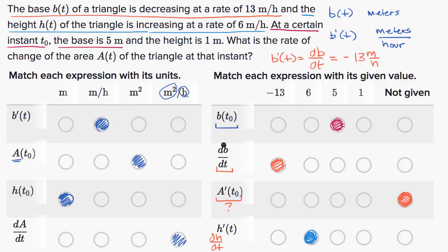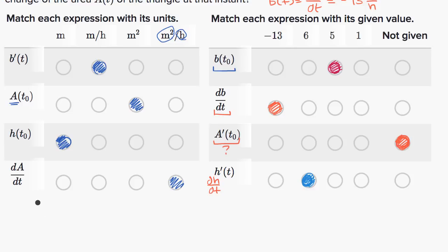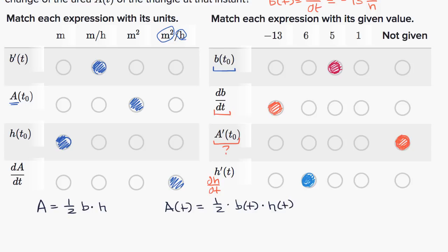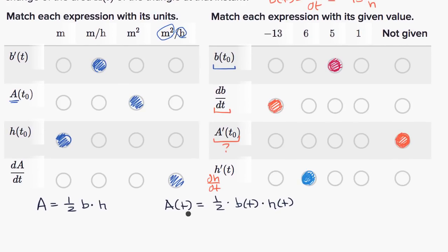Now we're ready to solve. For any triangle, area equals one half base times height. In this situation, area, base, and height are all functions of T, so A of T equals one half times B of T times H of T. To find the rate of change of area at that instant, we take the derivative of both sides with respect to T. The left side gives A prime of T. On the right side, using the product rule: one half times B prime of T times H of T...